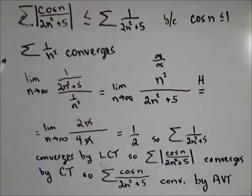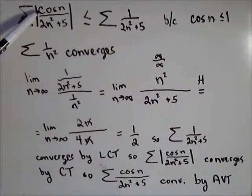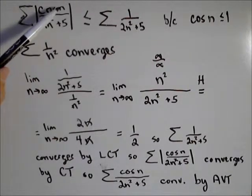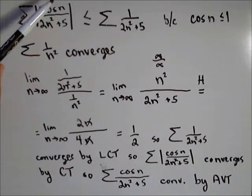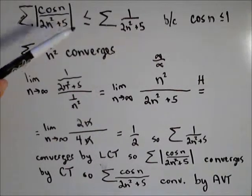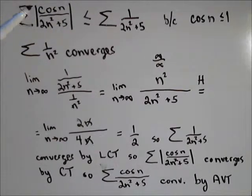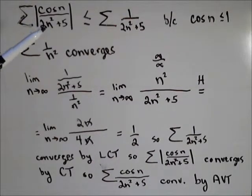One thing we didn't explicitly show in this proof — and it wouldn't have hurt using the comparison test — is that the terms will never be zero. Cosine of n will never be zero as long as n is an integer, because you'd have to reach integer multiples of pi, which requires irrational numbers.